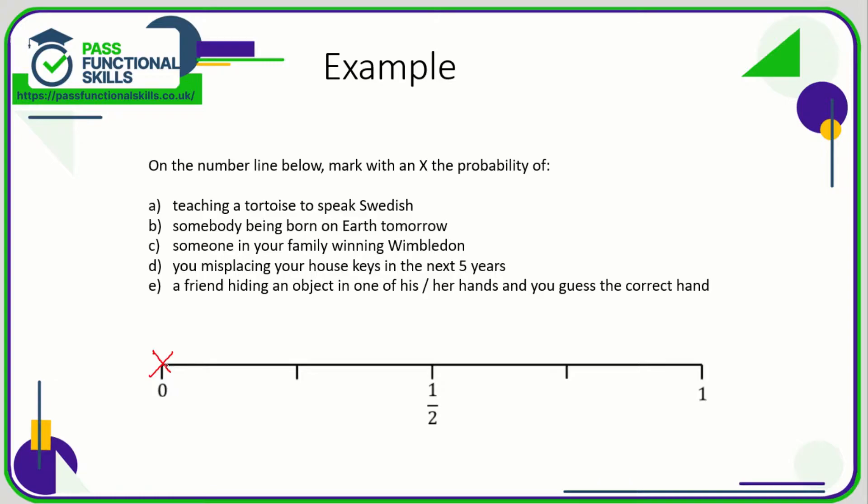Not close to zero, not very unlikely, that is completely impossible, so that is A.